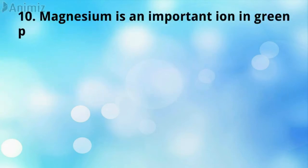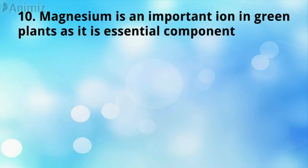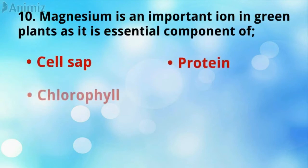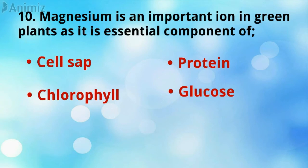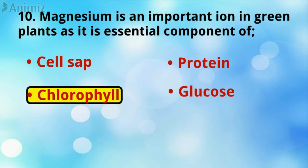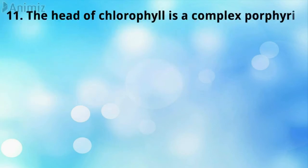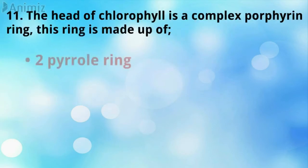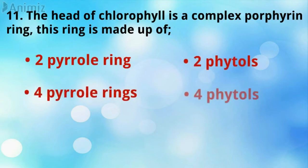Magnesium is an important ion in green plants as it is an essential component of chlorophyll. The head of chlorophyll is a complex porphyrin ring made up of four pyrrole rings.